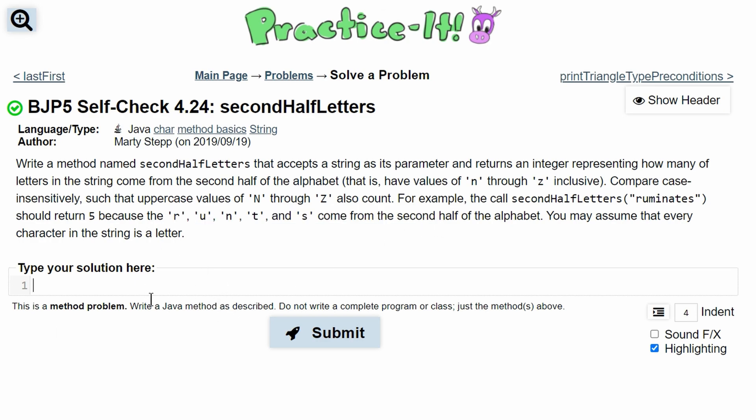So in our method, we can first start by having a public static. Since we know it's returning an integer, we'll call it int. And then the name, which is right here, secondHalfLetters. Pasting this in, we will add our parameter, which is a single string. We're calling this name.